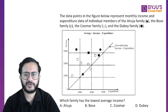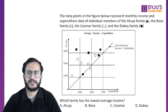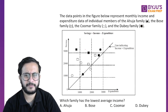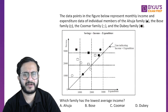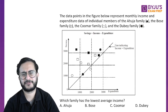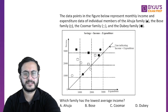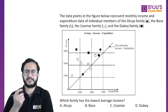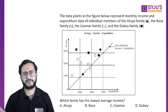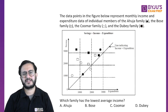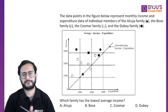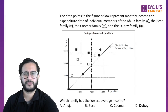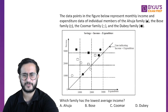The question which is asked is: which family has the lowest average income? One common thing that people do is they calculate the values from the graph — they read the values, add them, and divide by the required number of family members. That is a time-consuming process. This question could be answered just by observing the graph, so let us see how you can observe the graph and answer such questions.